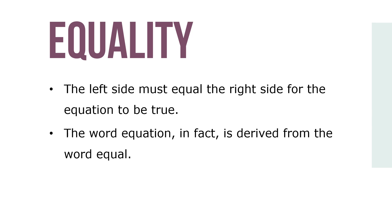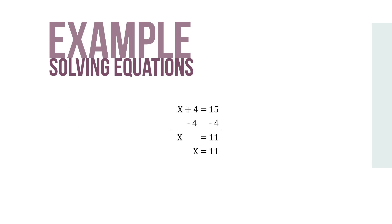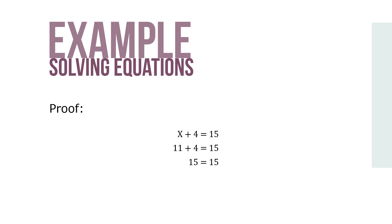Remember, an equation is a statement of equality. The left side must equal the right side for the equation to be true. The word equation, in fact, is derived from the word equal. Let's use an example: solve the equation x plus 4 equals 15 and prove the solution. The equation indicates addition, plus 4. To solve for x, apply the opposite operation, subtraction — subtract 4 from each side. For proof, substitute the answer 11 for x in the original equation: 11 plus 4 equals 15, so 15 equals 15 and the equation is true.